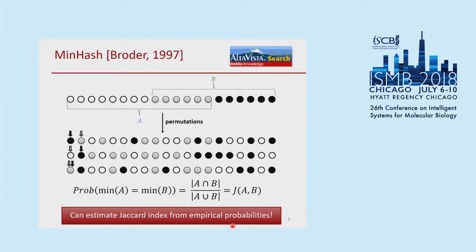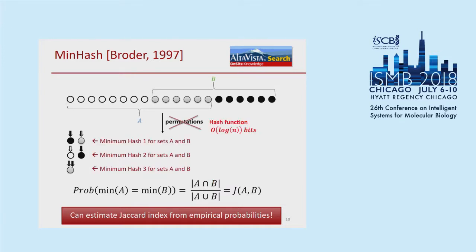You can estimate the Jaccard index from empirical probabilities by repeating k times. In practice, permutations are hard to work with, so instead we store a random hash function and for each hash we store the minimum value for each of the sets A and B. As with the naive minimum value estimator, it takes about O(log n) bits — and you'll notice that MinHash takes log n bits whereas HyperLogLog only takes log log n. We will fix that issue later.